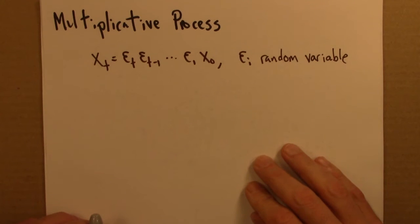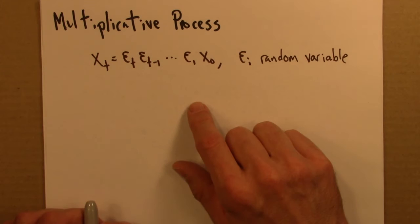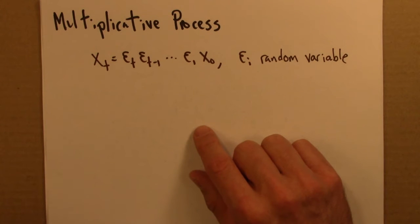Multiplicative processes tend to give us quantities that are distributed according to a log-normal. But a small change in the nature of the process can lead to a quantity that's distributed not log-normally but according to a power law.